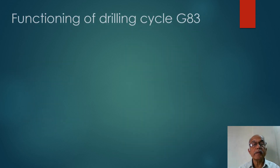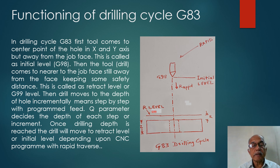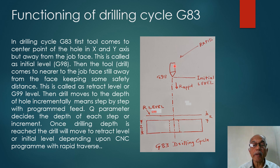Now we will see the functioning of drilling cycle G83. As we earlier discussed, the drilling cycle is a one-line program. First, the tool comes at rapid traverse to the point which is the center point of the hole in X and Y axis. Then the tool will move in rapid traverse to nearer to the job face. This is called as R level or safety level.